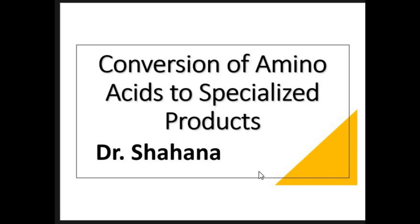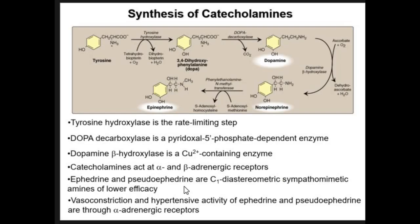We are learning the conversion of amino acids to the specialized products ephedrine and pseudoephedrine. These are the carbon-1 diastereomeric sympathetic amines of lower efficacy compared to epinephrine. They have vasoconstriction and hypertensive activity, and they act on the alpha-adrenergic receptors.